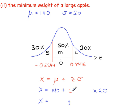Okay, so the Z value this time is 0.8416. Because we're looking at something that's a large apple. That's this region here. And it says the minimum weight. So we're looking at the left-hand side of this region, which is this Z value here, 0.8416.